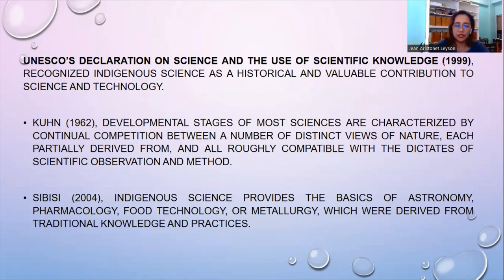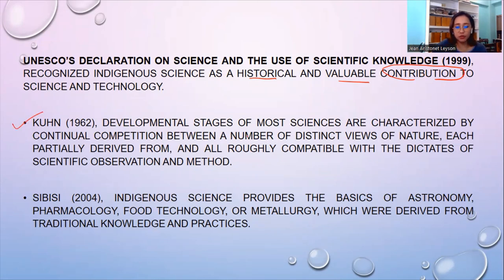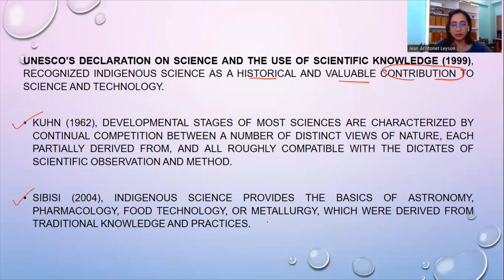According to UNESCO's declaration on science and the use of scientific knowledge, they recognized indigenous science as a historical and valuable contribution to science and technology. According to Kuhn, developmental stages of most sciences are characterized by continual competition between a number of distinct views of nature, each partially derived from and roughly compatible with the dictates of scientific observation and method. According to CBC, indigenous science provides the basis of astronomy, pharmacology, food technology, and metallurgy, which were derived from traditional knowledge and practices — confirming that indigenous science was a stepping stone for the knowledge and technology we have today.